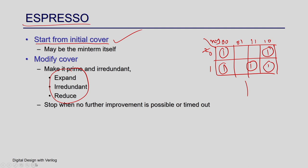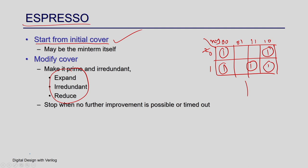Then it applies three operations — expand, redundant, and reduce — iteratively to improve this solution. If it finds a better solution, it will accept it; otherwise, it will just reject it. It then does the operations again, randomly in different directions, to try to reduce the cost. Over time, it may end up getting a better solution. For example, the best solution may end up having two product terms — y-bar for four literals and x·z — as the minimal solution.